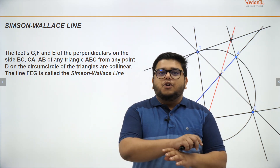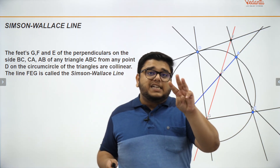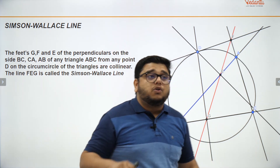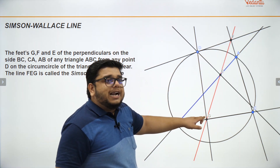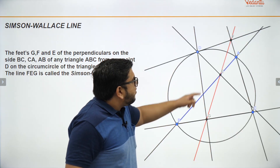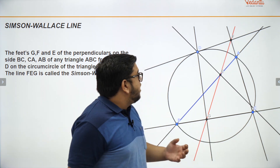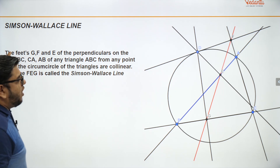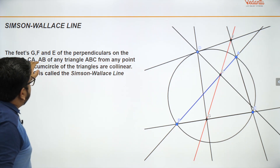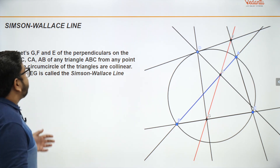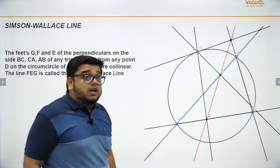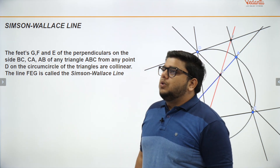The amazing thing — which is almost surprising — is that all three feet of the perpendicular points pass through the same line, meaning all three points are collinear. This red line is the line composed of the foot-of-perpendicular points G, E and F. So this is what the Simpson-Wallace line is: the feet G, F and E of the perpendiculars on sides BC, CA and AB of triangle ABC from any point D on the circumcircle are all collinear.